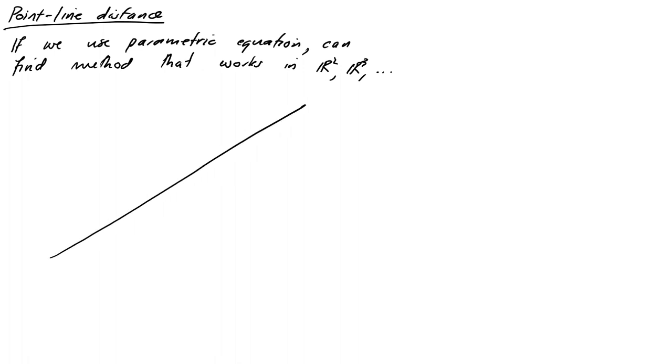Okay. So your line is X is equal to P plus TU. So you've got a point P on the line which is known. And a point Q which sits off the line. You're trying to find that distance.